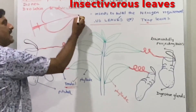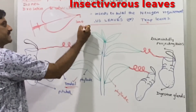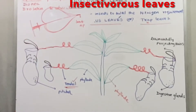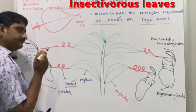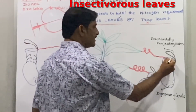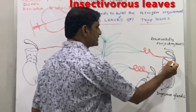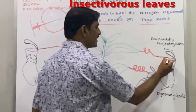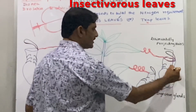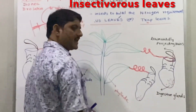The leaf apex or leaf tip modifies into a colorful lid. The rim of the pitcher consists of nectar glands, and the inner wall of the pitcher contains digestive enzymes.